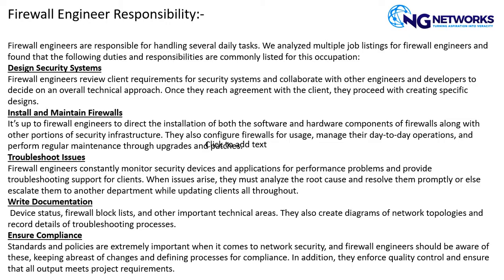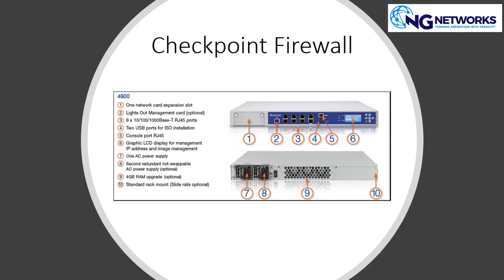Now we have the Check Point firewall. I'm showing you what the hardware appliance looks like — you can see my screen. This is the firewall: it has a USB port, network card, RJ45 ports for LAN and WAN connectivity, an LCD display for error messages, and an AC power supply. We have two redundant appliances — if one fails, the second takes over.